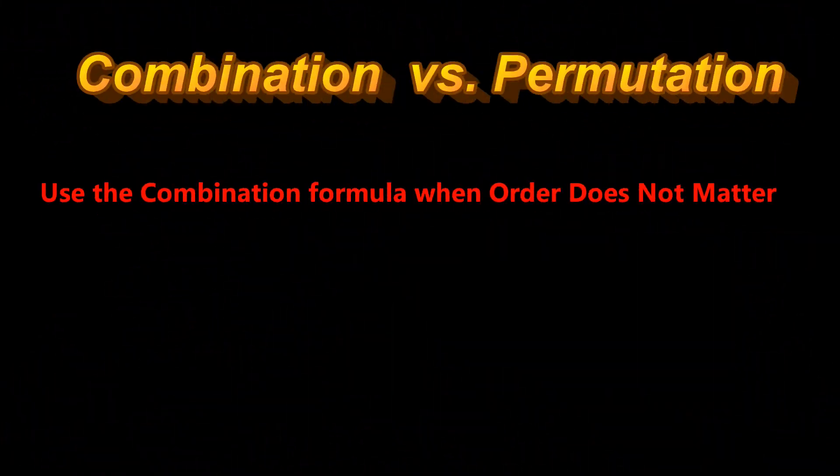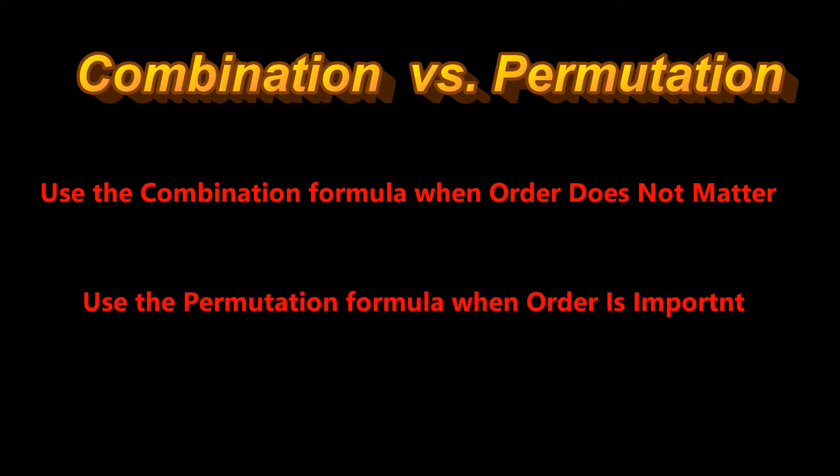The difference between using a combination versus a permutation is if order is important or not. If the order of something happening doesn't matter, then we use the combination formula. If the order is important, then we use the permutation formula. Let's do some examples and the difference between combination and permutation will become much clearer.